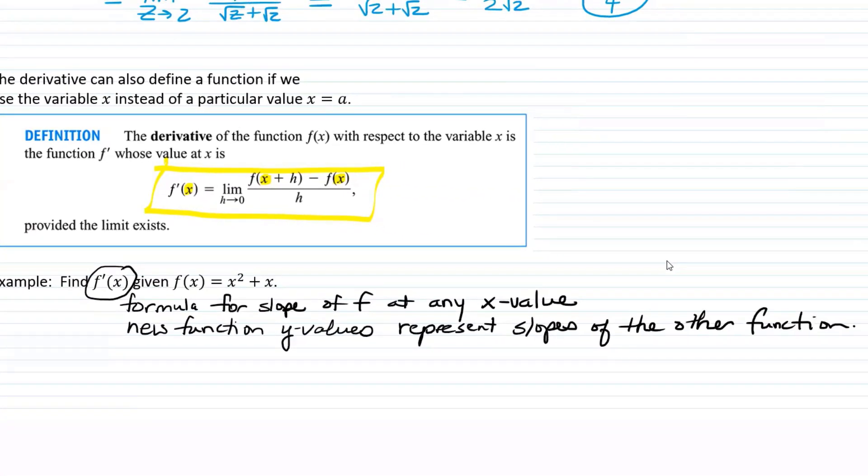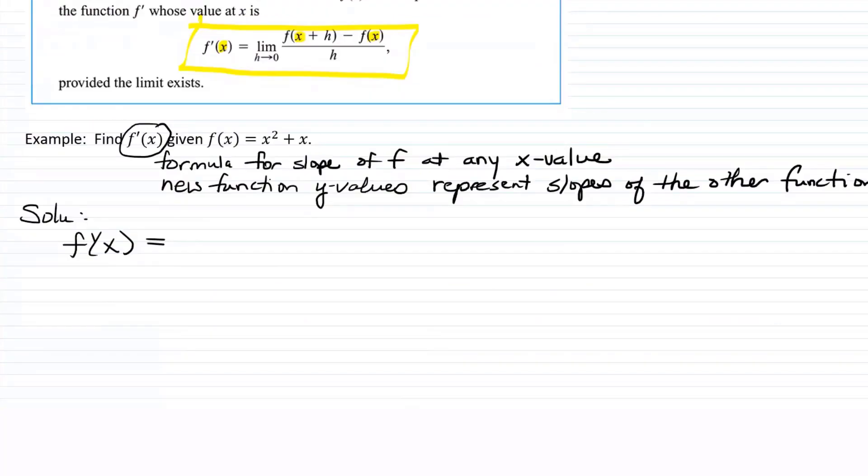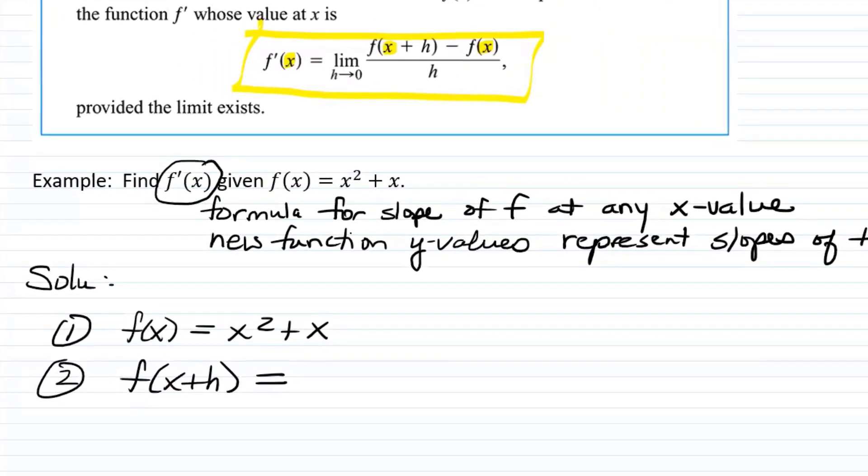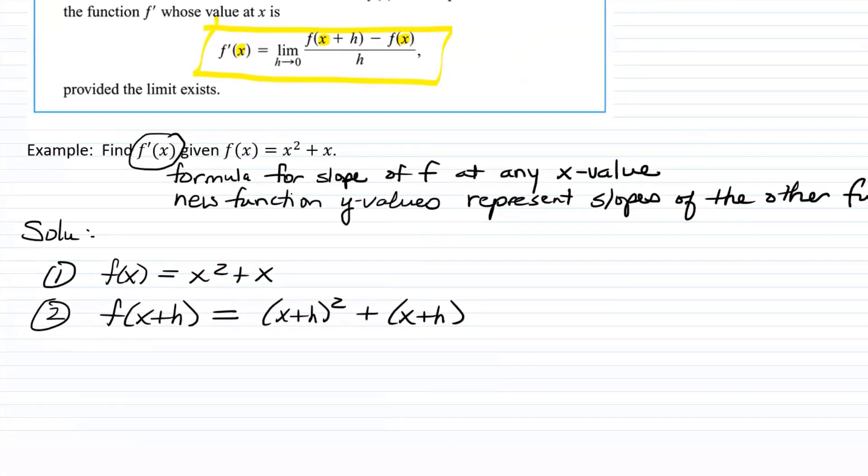The example says find f prime of x given that f of x equals x squared plus x. f prime of x means we're looking for a formula for the slope of f at any x value. So let's go ahead and find this solution. When you're taking the limit of the difference quotient, it's helpful to write down number one, what f of x is equal to, in this case, x squared plus x. Number two, what f of x plus h is equal to. So in this case, that would be x plus h squared plus x plus h.